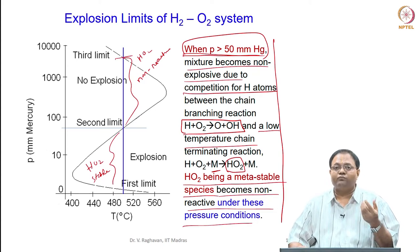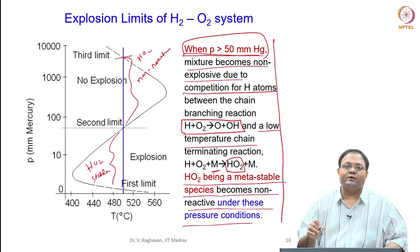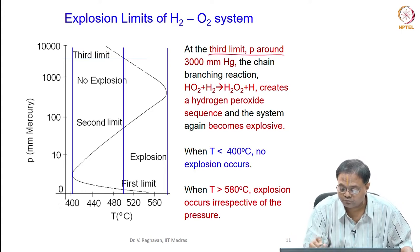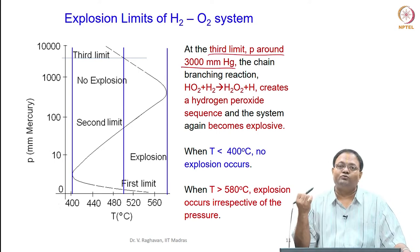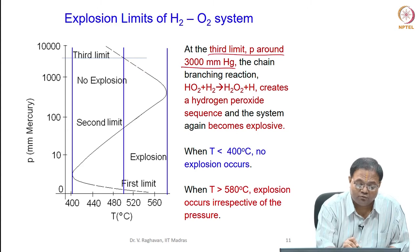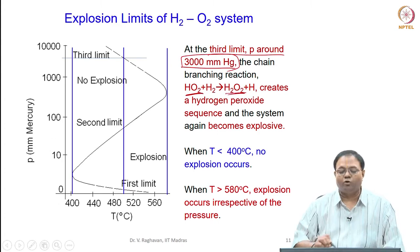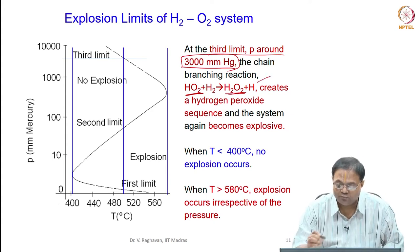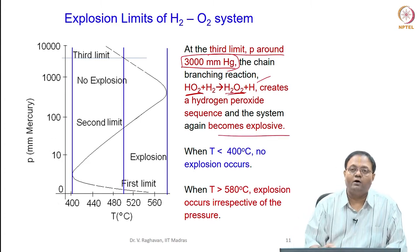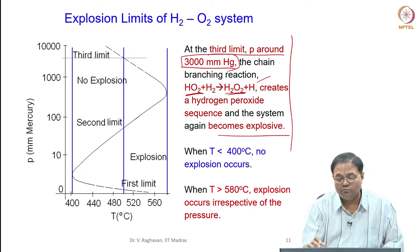If HO2 were fully stable and reactive, we would get explosion in this range also, but it is not. Under this special pressure condition it is not going to be reactive, so we get the non-explosive nature of the mixture. The third limit is when the pressure is around 3000 mmHg. What happens is the HO2 produced in large quantities now reacts to form hydrogen peroxide H2O2 - this is called the H2O2 sequence - and the radicals produced here make the sequence sustainable, so again we get explosive tendency.